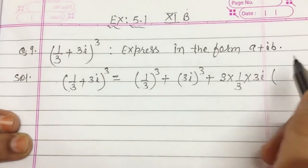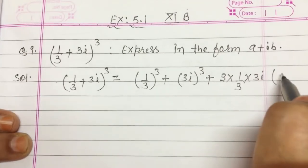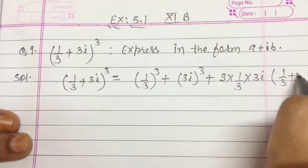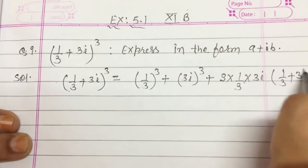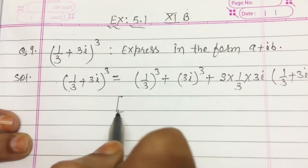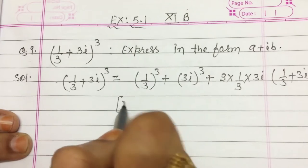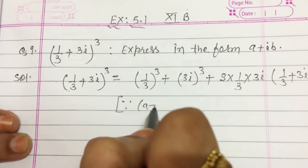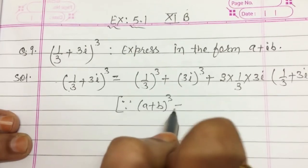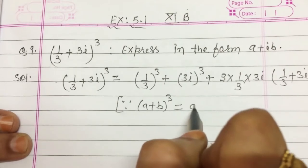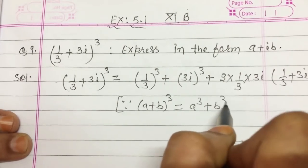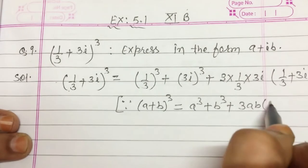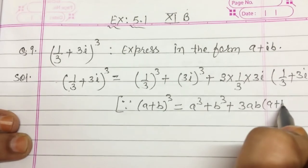And in the bracket write a plus b, so it is 1/3 plus 3i. Now write the formula we have applied: (a + b)³ = a³ + b³ + 3ab(a + b).